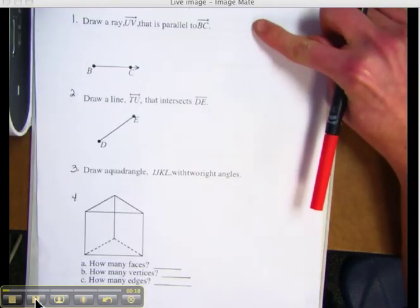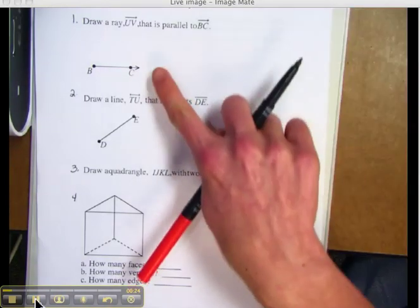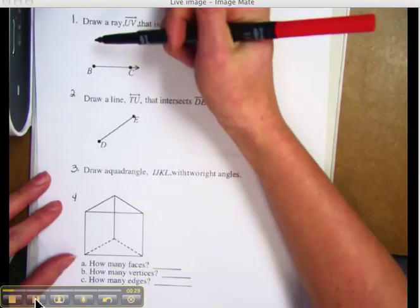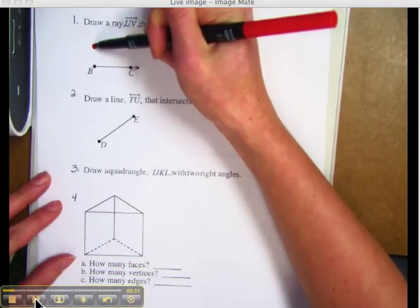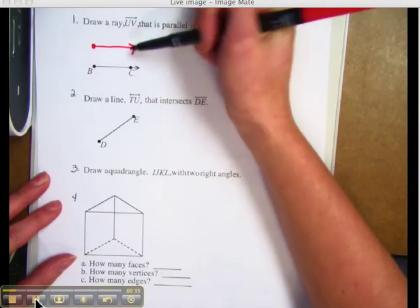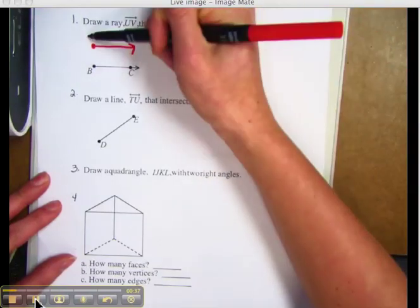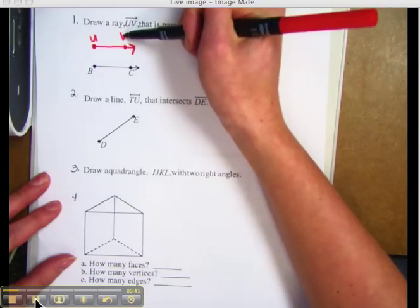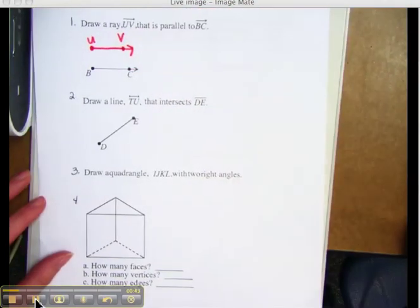Number 1 says draw a ray, ray UV that is parallel to ray BC. Here is ray BC. I know that parallel means opposite. I'm going to draw my ray the same as BC, but this one I'm going to label U. I'm going to create another point, V.